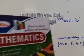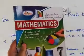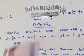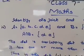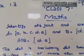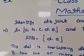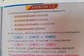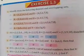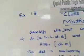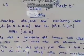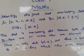Bismillahirrahmanirrahim. Assalamu Alaikum, dear viewers and friends. Today we are going to look at your Grade 7 exercise number 1.3. If you open the book to page number 15, you will find exercise number 1.3: identify from the following disjoint and overlapping sets.